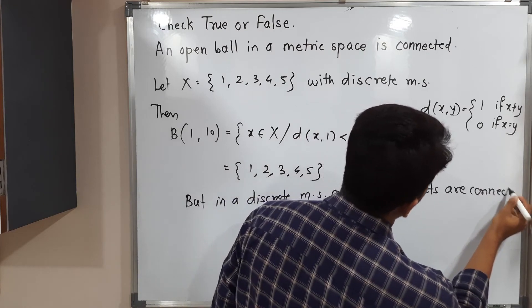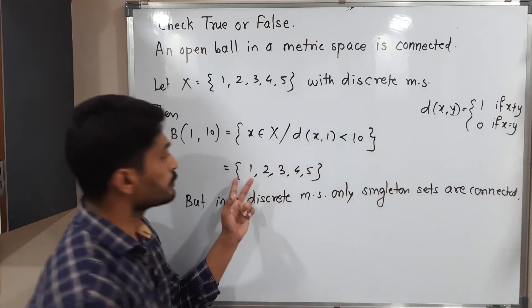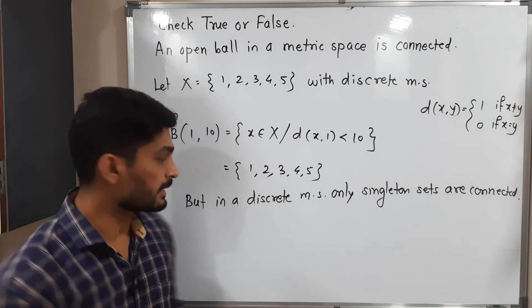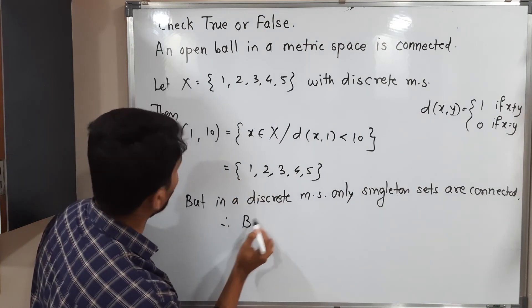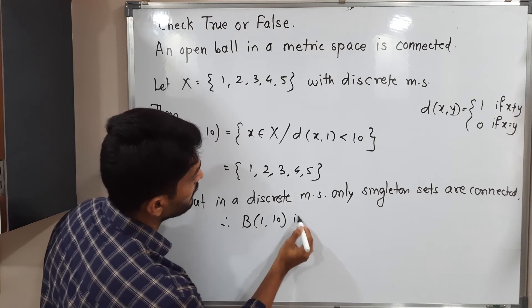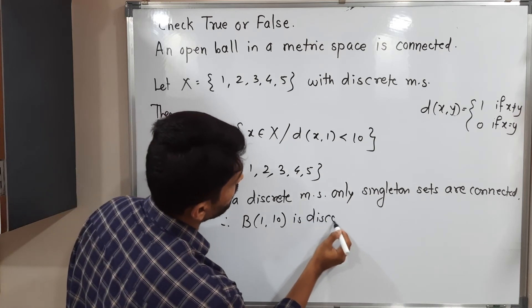So therefore this open ball is not a singleton set. It has 5 elements. So therefore open ball 1 with radius 10 is disconnected. It is disconnected.